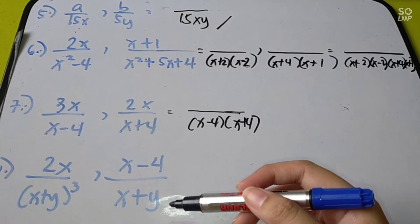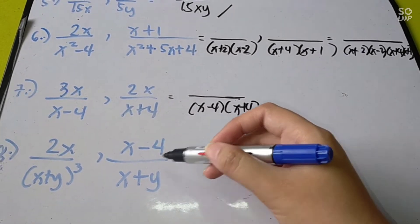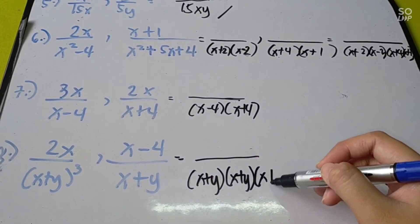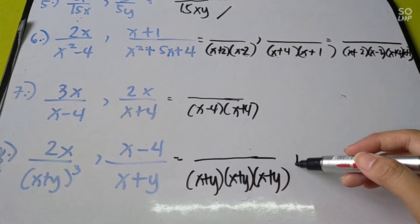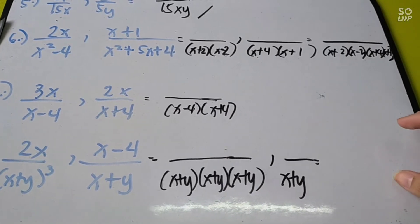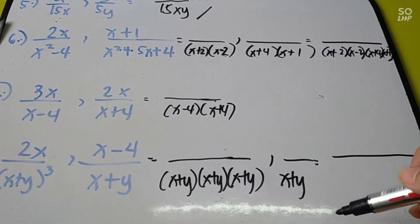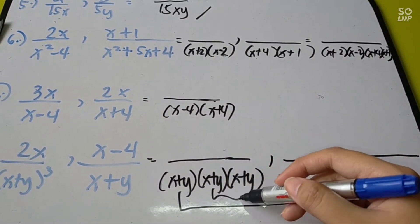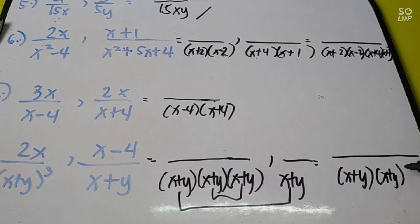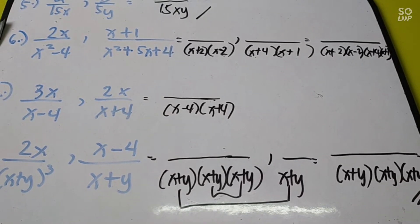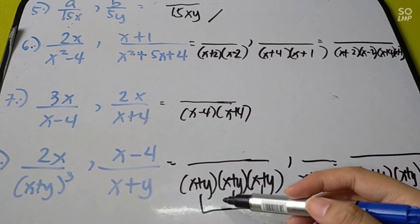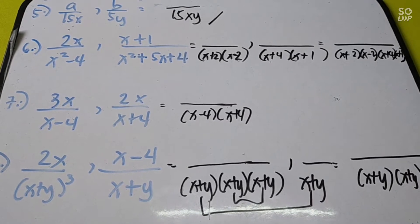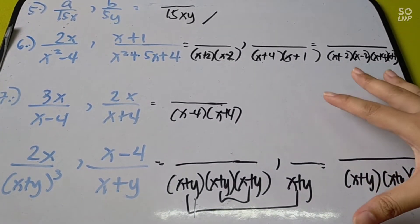For denominators (x plus y) cubed and (x plus y): (x plus y) cubed means (x plus y)(x plus y)(x plus y). Since x plus y appears in both, count it once as common. The LCD is (x plus y) cubed — take the highest power. When factors repeat, count as one and take the remaining unique factors multiplied together. That is your LCD.